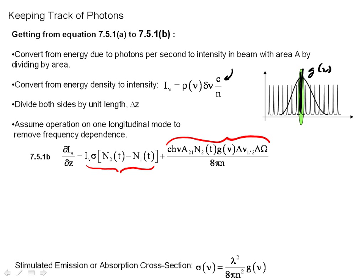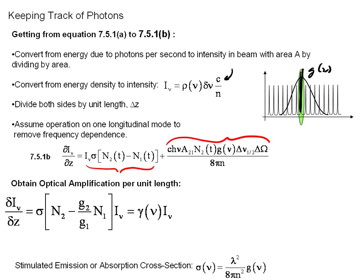It turns out that the spontaneous emission term is very, very small when the intensity is large, because the first term completely overwhelms it. But when the intensity is zero, this is the only thing creating photons. So it's very important to get the laser started. But once the laser gets going, it fades into insignificance.